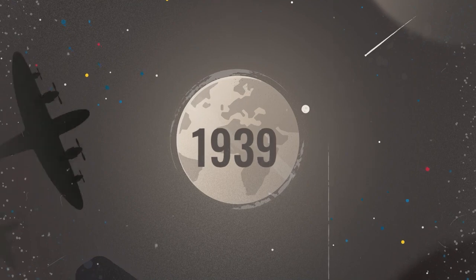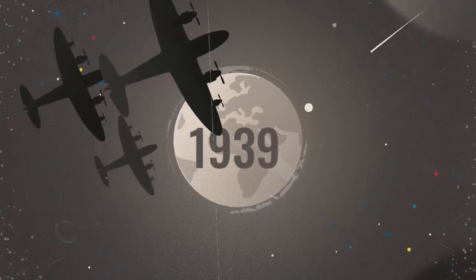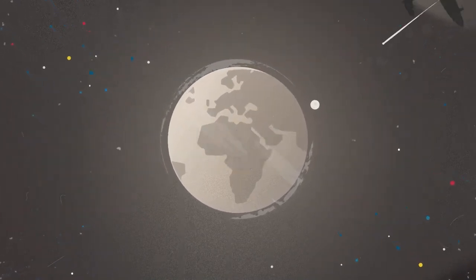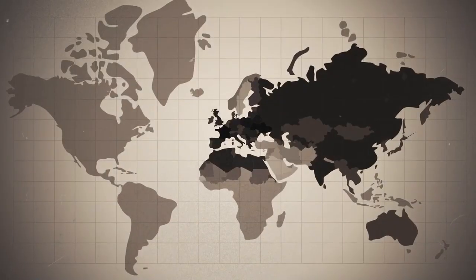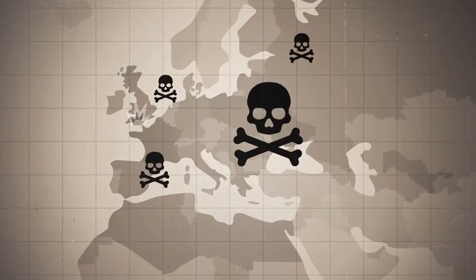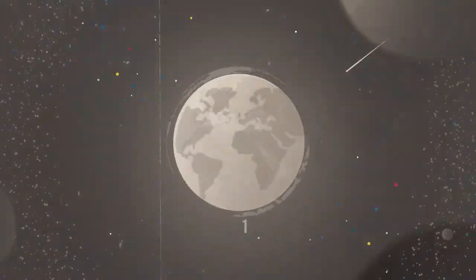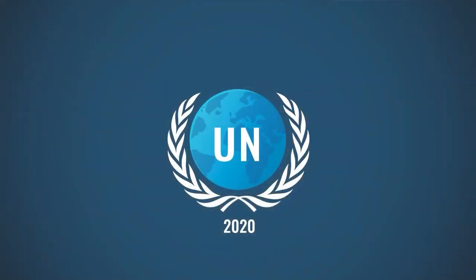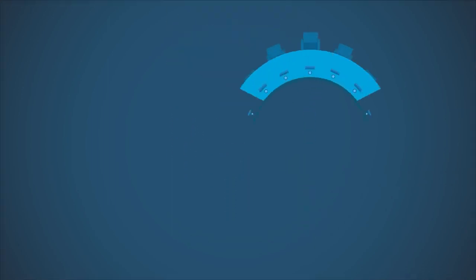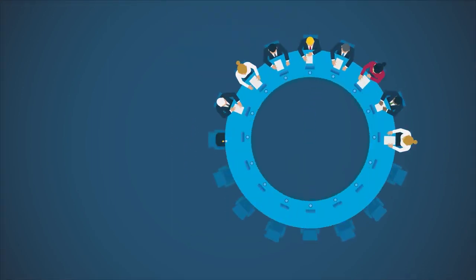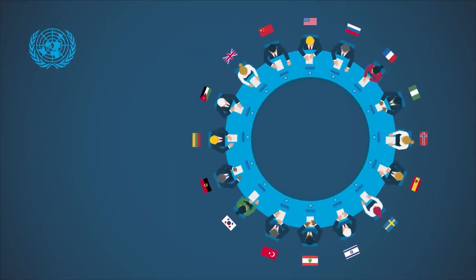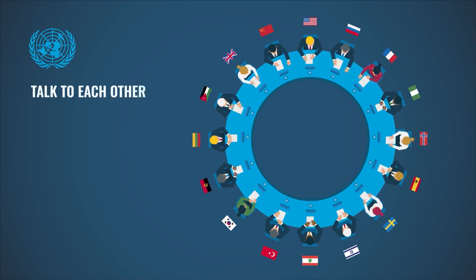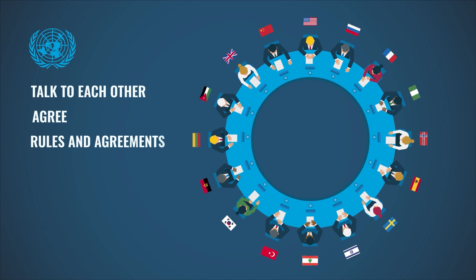The Second World War caused enormous destruction and left large parts of the world in ruins. That's why the United Nations was established with one main target: to prevent war in the future. The UN is a meeting point where leaders from all around the world can interact, and countries try to agree on which rules and agreements should apply in the world.